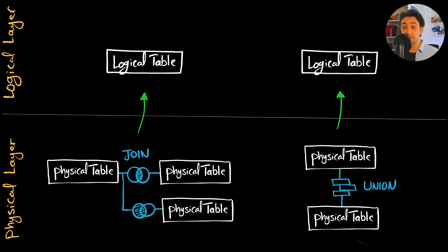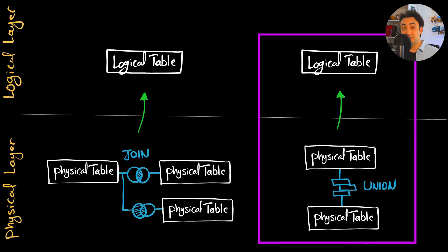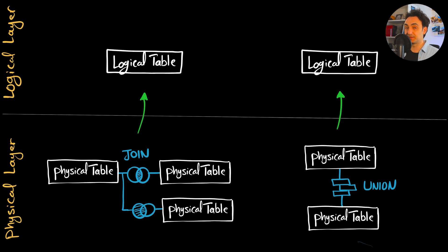So that means we're going to have two logical tables: the first one will represent three tables after doing a join, and the second one will represent two tables using union. But we still need in data modeling to connect those two logical tables, and in Tableau we have only one method to do that — we call it relationships.